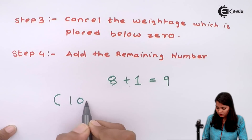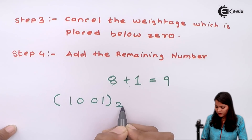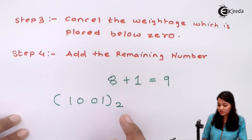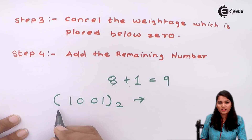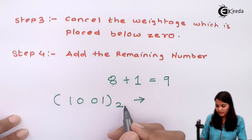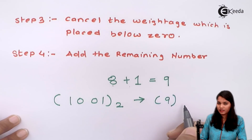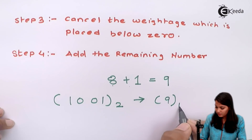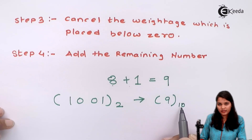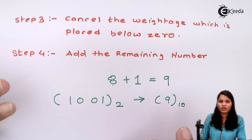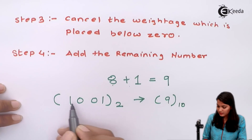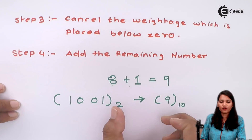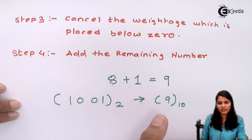Our binary number was 1001. It is very important to write the base, because without the base we cannot identify which number system is being used. So 1001 in the binary number system (base 2) gives 9 in the decimal number system (base 10). In the exam you must write the answer with the base notation everywhere when converting binary to decimal.